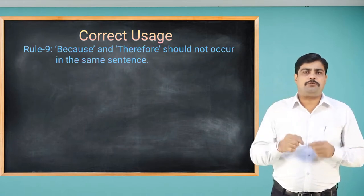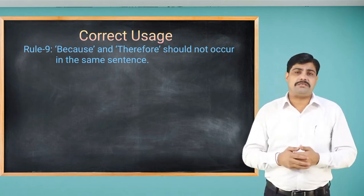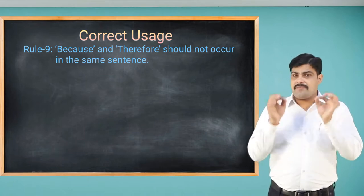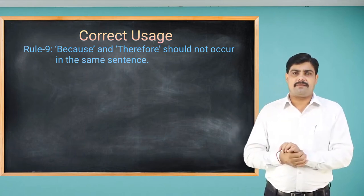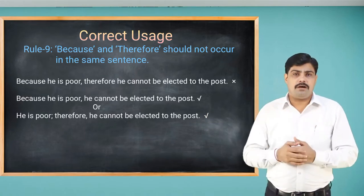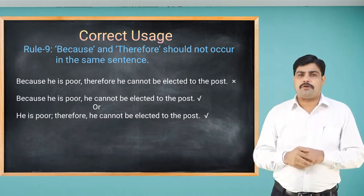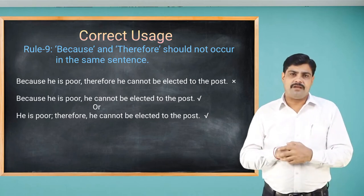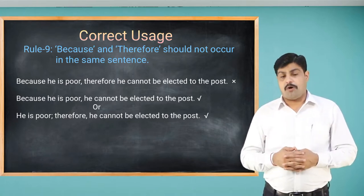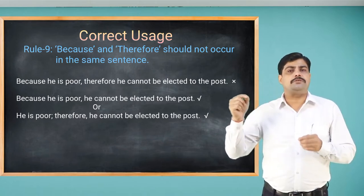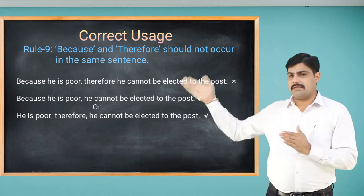'Because' and 'therefore' should not occur in the same sentence — this is very important. In error detection, you may find these two words together, which is incorrect. For example, 'Because he is poor, therefore he cannot be elected to the post' is wrong. You must use either: 'Because he is poor, he cannot be elected to the post' — or — 'He is poor, therefore he cannot be elected to the post.' Either 'because' or 'therefore' should be used, but never both together.